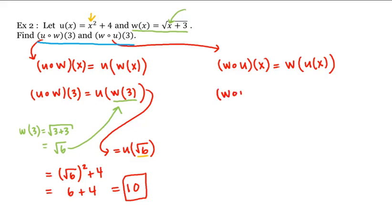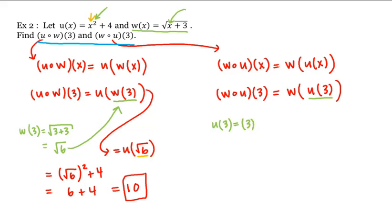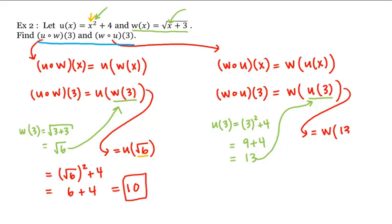And what about w composed with u of 3? This is equal to w of u of 3. What is u evaluated at 3? Looking back, we plug 3 in wherever we see an x: u evaluated at 3 is equal to 3 squared plus 4, which is 9 plus 4, which is 13. So we plug that in and evaluate w at 13.